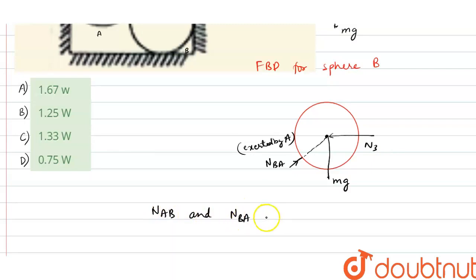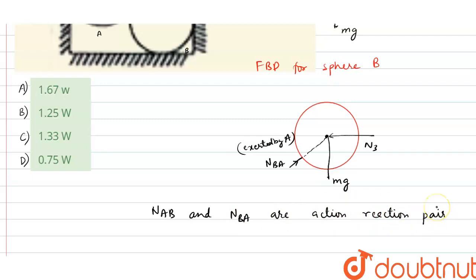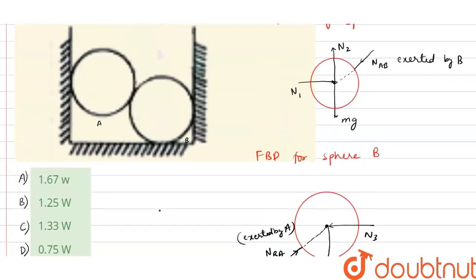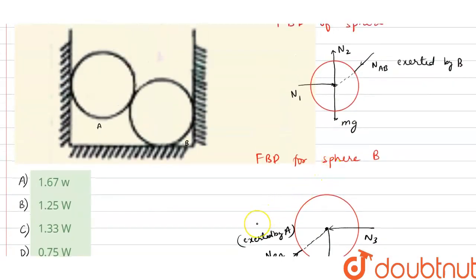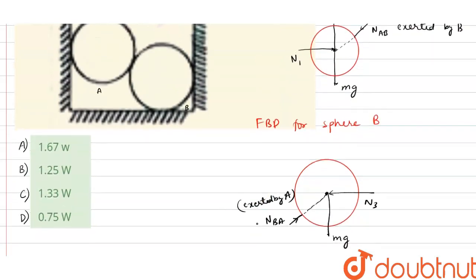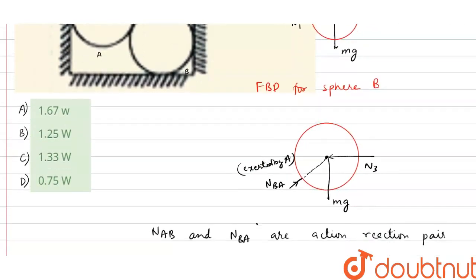Nab and Nba are an action-reaction pair. From the information we have, Nab and Nba are the action-reaction pair — they are equal in magnitude and opposite in direction.